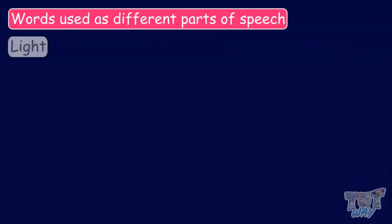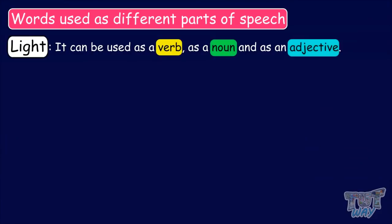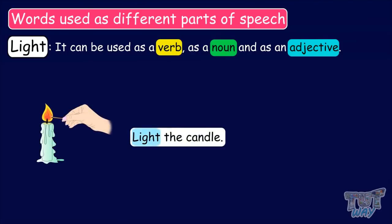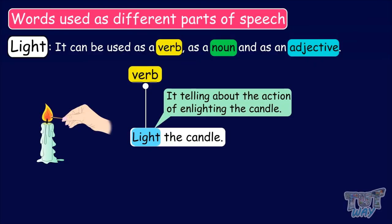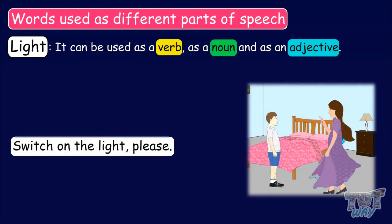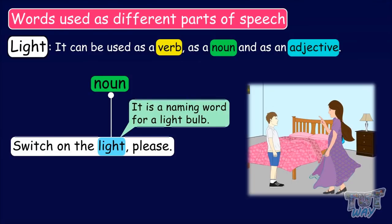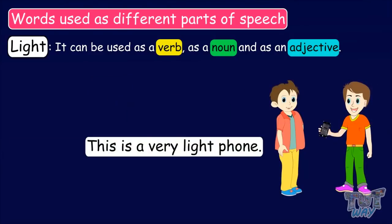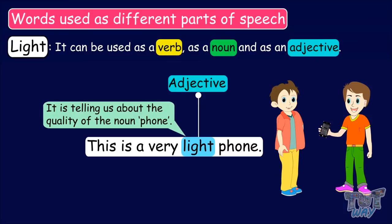Our next word in the list is 'light'. The word light can be used as a verb, as a noun, and as an adjective. Light the candle. Here, the word light is used as a verb, as it is telling about the action of igniting the candle. Switch on the light, please. Here, the word light is used as a noun, as it is a naming word for a light bulb. This is a very light phone. Here, the word light is an adjective, as it is telling us about the quality of the noun phone. So, the word light can be used as a verb, a noun, and an adjective.